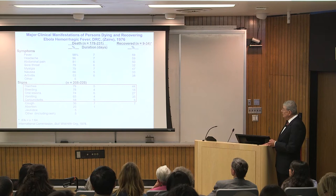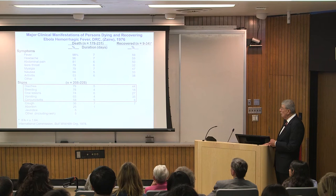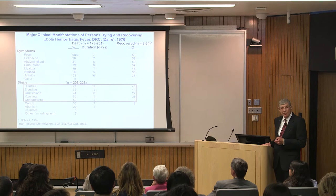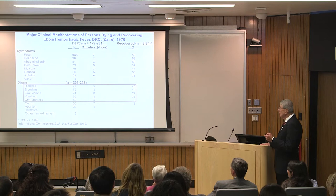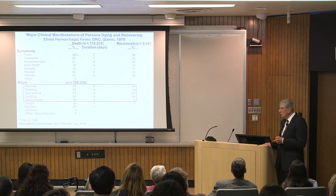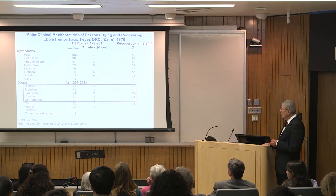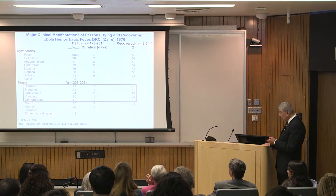The signs: diarrhea, then as now, was very prominent. Bleeding was prominent — but oozing, as I described for that patient, was much more prominent than frank hemorrhagic extravasation as defined in that science fiction novel The Hot Zone. Oral lesions, vomiting, and conjunctivitis were very prominent in these patients. That was the clinical syndrome.